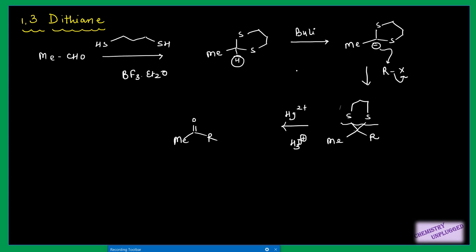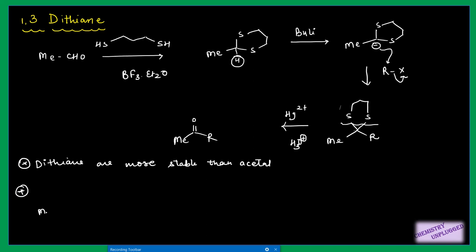In this way we will have a ketone as the product. The next important point is that 1,3-dithianes are more stable than acetals. Another important concept is the basicity of sulfur in 1,3-dithiane compared to oxygen in an acetal. They can ask whether sulfur is more or less basic than oxygen. The answer is that sulfur will be less basic.